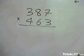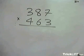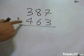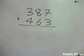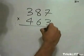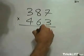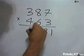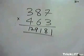In this video we will see how to multiply two three-digit numbers in one step. You can multiply 387 by 463 as fast as that.